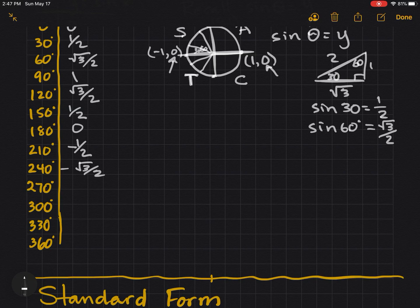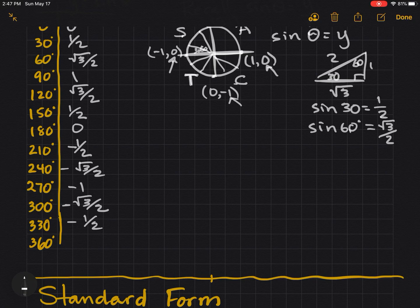270. We have the point 0, negative 1. So that has a y coordinate of negative 1. Now we have 300 has a reference of 60. Radical 3 over 2 is the sine of 60 degrees. In this quadrant, sine is negative. And 330 has a reference of 30, which is negative 1 half. And 360, we're all the way back around, is 0.